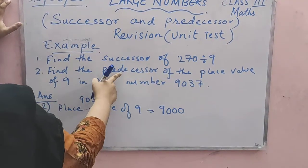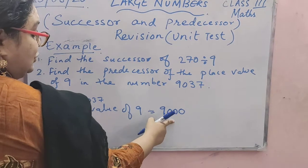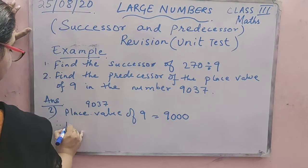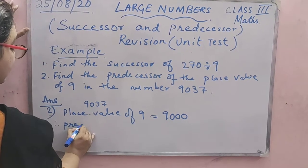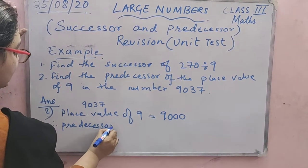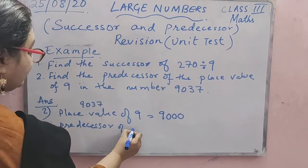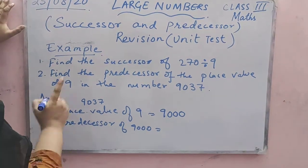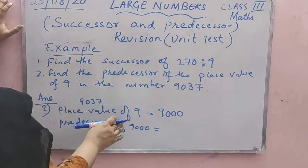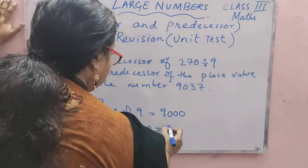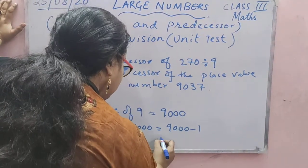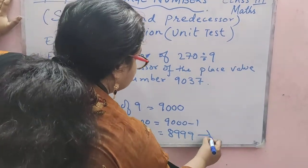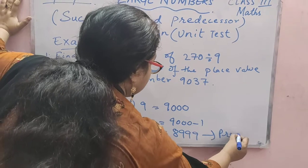Now we have to find the predecessor of this numeral — the predecessor of 9000. As you know, whenever you want to find the predecessor, you have to subtract 1. So 9000 minus 1 equals 8999. So 8999 is your predecessor.